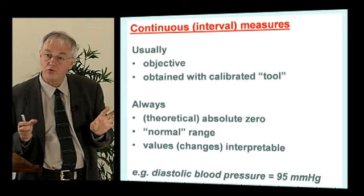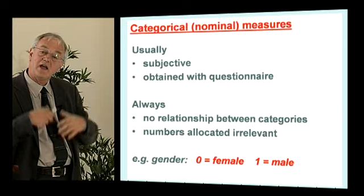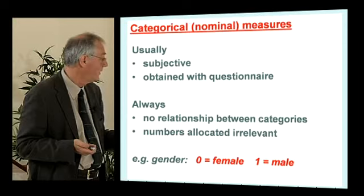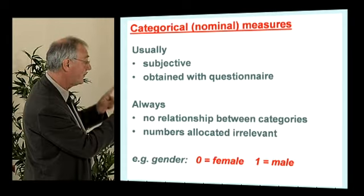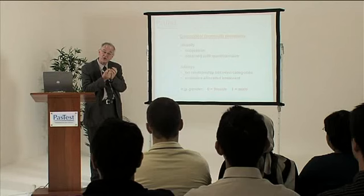With categorical data — for example, recording the sex of a patient as male and female — we apply numbers because computer programs require that. But here we don't have to use 0 and 1; we could use 1 for female and 2 for male. It doesn't matter — we're just using numbers as labels. If you're in an MCQ situation and unsure whether data is continuous or categorical, ask yourself: can I change the numbers? If you can't, it's almost certainly continuous. If you could change the numbering system, it will be categorical.